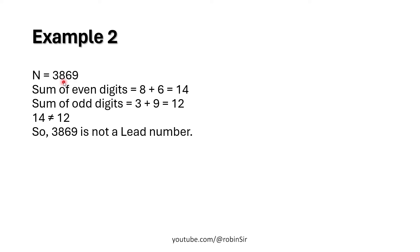Another example: if we take the sum of even digits, we have 8 and 6, so 8 plus 6 is 14. Whereas if we take odd digits, we have 3 and 9, so 3 plus 9 is 12. Since 14 and 12 are not equal, 3869 is not a lead number.